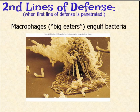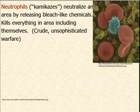First, we have cells referred to as macrophages. Macro means big and phage means to eat. Macrophages travel throughout the body and eat bacteria and other foreign debris. Neutrophils are another kind of cell that patrol the body during the second line of defense. They're sometimes referred to as kamikaze cells — they neutralize an area by releasing bleach-like chemicals, which kills everything in the area, including themselves — hence the name kamikaze.